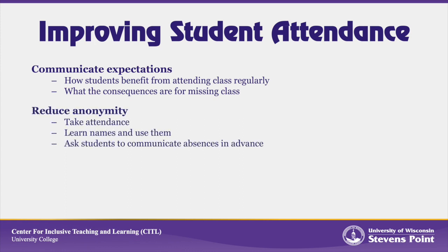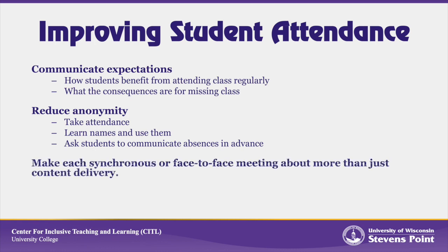Next, reduce anonymity. Many students don't attend because they think you won't notice or that you don't care. Taking attendance signals to your students that you find their attendance important. Learning their names and using them shows that you are connecting with them as individuals and have some relationship with them, which provides incentive to attend. Finally, asking students to communicate absences in advance lets them know that you care whether or not they're going to be present.